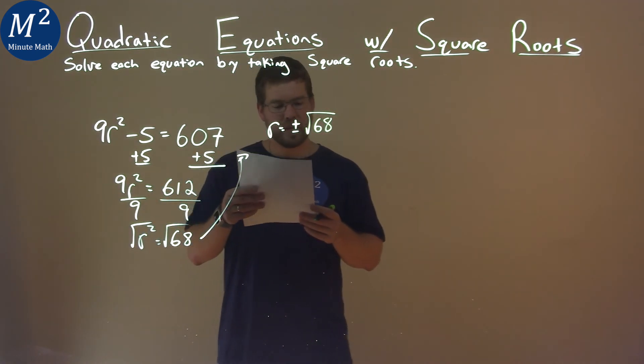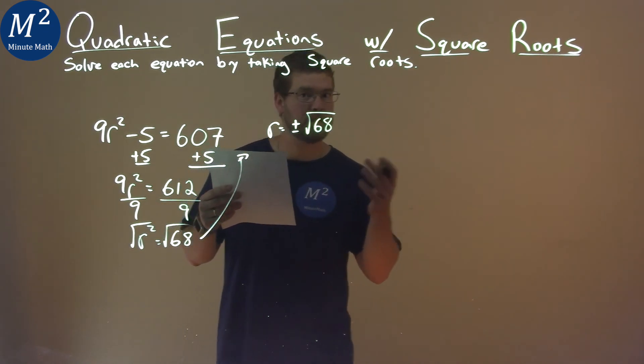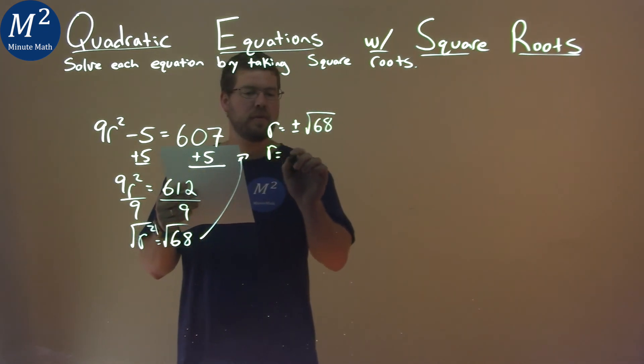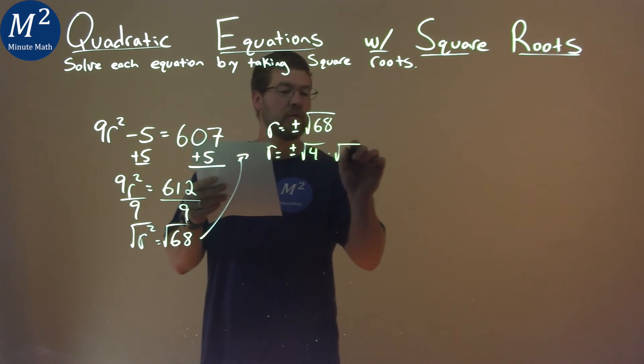Well, square root of 68 does break down. 68 is 4 times 17. So this is equal to r equals plus or minus the square root of 4 times the square root of 17.